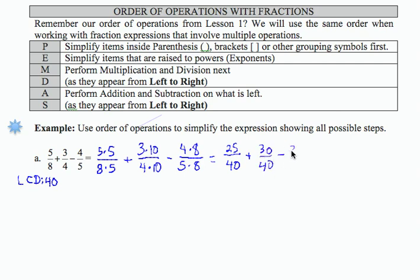Now I'm going to use my order of operations and combine the first two fractions. So I'm going to get 55 over 40, minus 32 over 40.